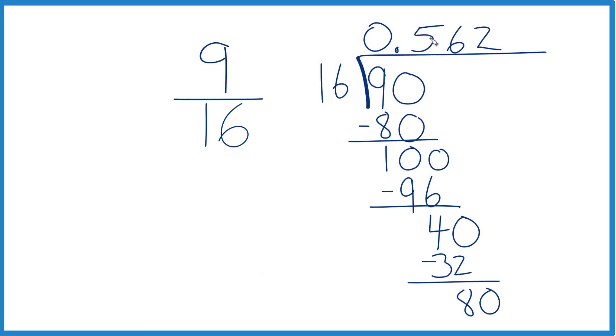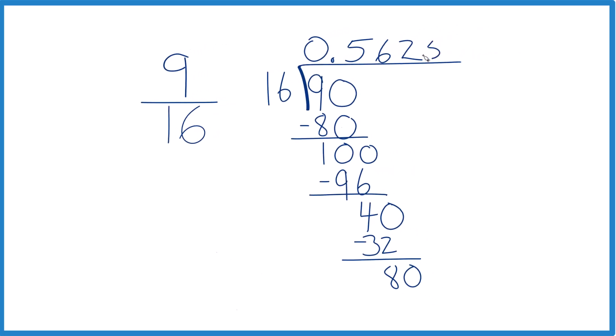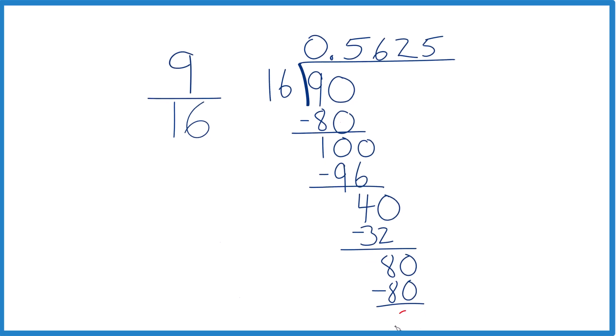And remember, 5 times 16, that was 80. So we're just going to put a 5 up here, we'll get 80, and then when we subtract, no remainder. So we're done.